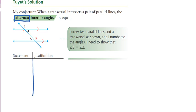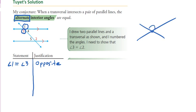We know that angle 1 and angle 3 have a relationship. What do we know about angle 1 and angle 3? Angle 1 is equal to angle 3 because they are opposite angles — also called vertically opposite angles. If you have any two straight lines, the angles that are opposite the intersection point are always equal. Those two are equal, these two are equal. Okay, opposite angles.